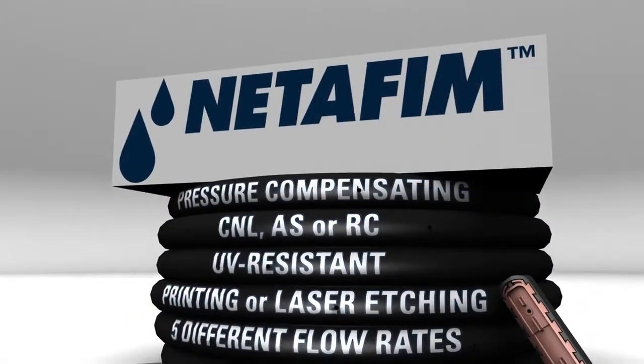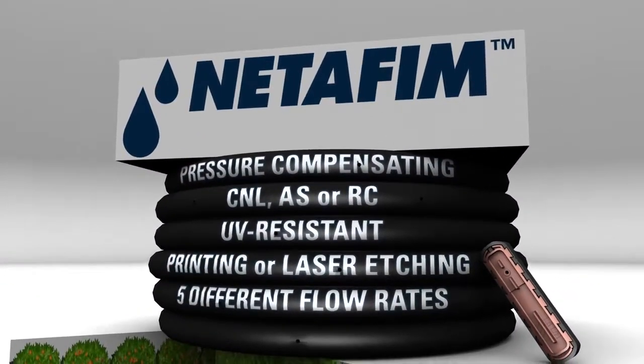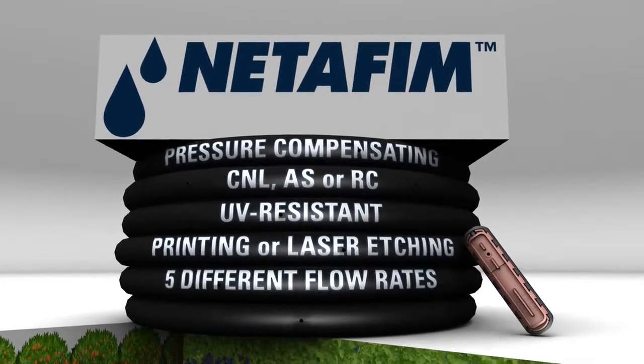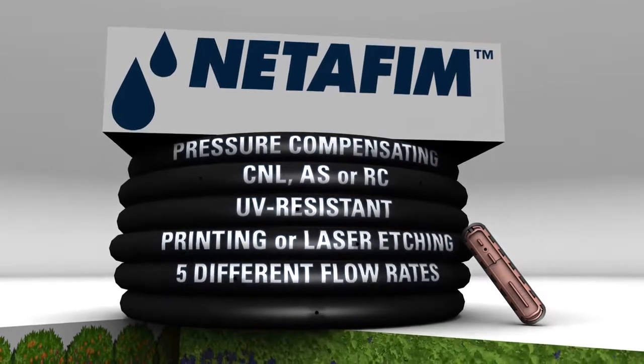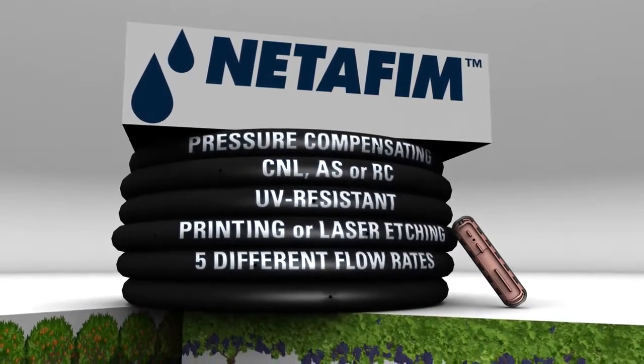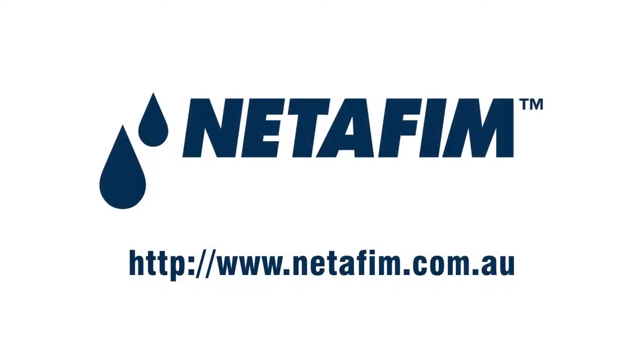Uniram XR is pressure compensating, UV resistant, with either laser etching or printing on the dripper line for easy identification, and is available in 5 different flow rates to accommodate almost any application. For more information on Netafim Uniram XR with Cupron Enhanced Built-in Root Intrusion Protection, visit Netafim.com.au.